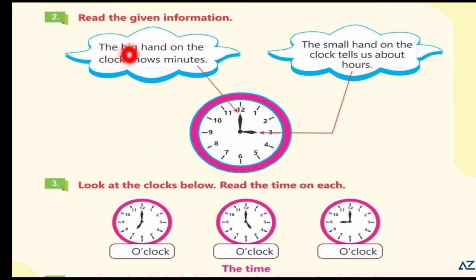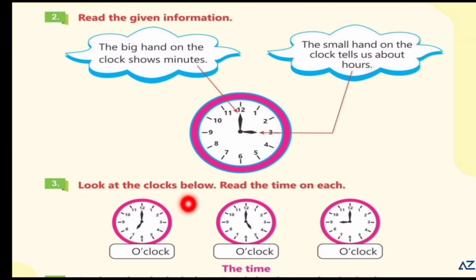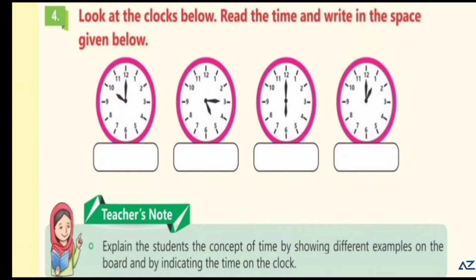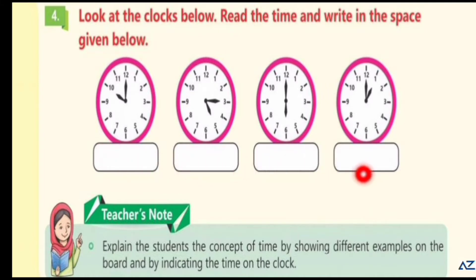Read the given information. The big hand on the clock shows minutes. The small hand on the clock tells us about hours. Look at the clock below and read the time on each: seven o'clock, five o'clock, nine o'clock. Now look at the clocks below, read the time and write in the space given: ten o'clock, five fifteen, six o'clock, one o'clock.